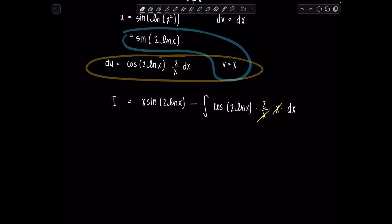Okay, so let me just clean up before we get there. So we have x sine 2 ln of x minus, I'm going to take this two outside. Two integral cosine of 2 ln of x dx. And this is all equal to our original integral. Perfect.